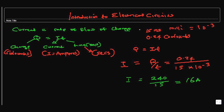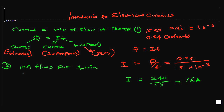Now we're going to do another problem. We have a current of 10 amps — what charge do you get if a current of 10 amps flows for 4 minutes? This is slightly more complicated, but again, go back to the formula: Q = I×t.